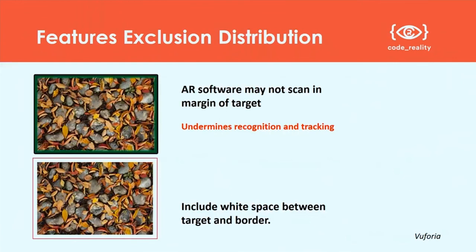Some tools deliberately exclude the margin — typically between 10 and 20 percent of the width of the actual target. So it makes sense to just expand the canvas and have white space in that margin. But also have a clear high-contrast boundary at the edge. That way, the software knows where the edges are and won't process anything in the white space unnecessarily. This can easily be done by shrinking the target and adding a square around the outside, or in Photoshop by expanding the canvas size and filling the new space with white.